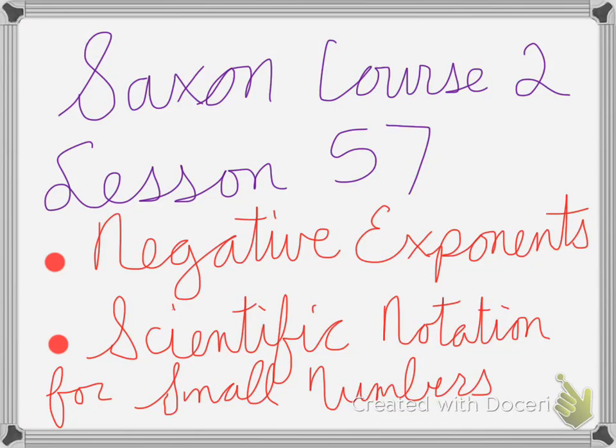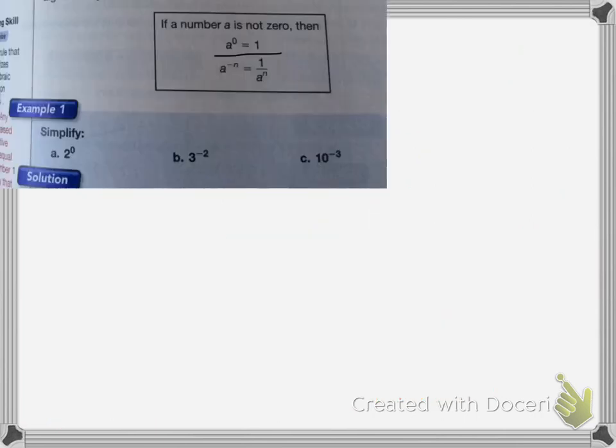Saxon Course 2 Lesson 57 is on negative exponents and scientific notation for small numbers. If a number is not 0, then that number to the 0 power equals 1. And if a number has a negative exponent next to it, then it turns it into a fraction, 1 over that number to the exponent.